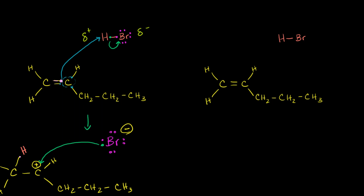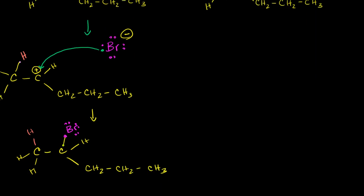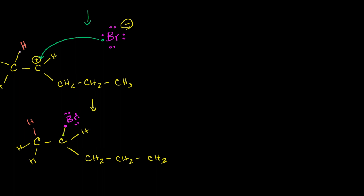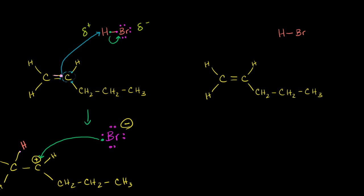In the last video, we saw a potential mechanism where if we reacted hydrogen bromide with this alkene, we can essentially add — the addition of this halide to what started as an alkene, and then it ended up as 2-bromopentane, as an alkane. But when we did that, we made a somewhat arbitrary decision, or I didn't explain why we made that decision.